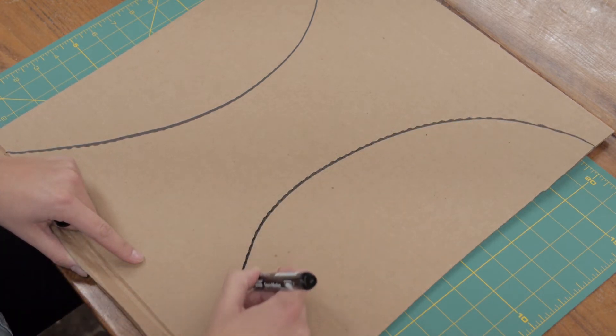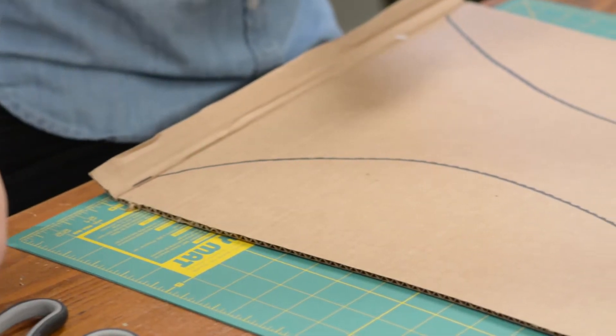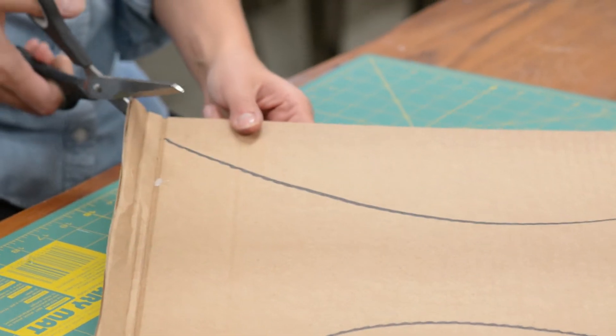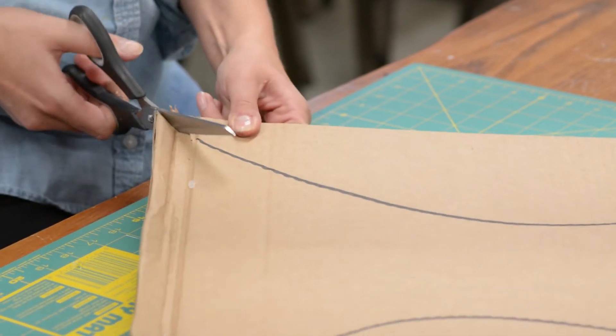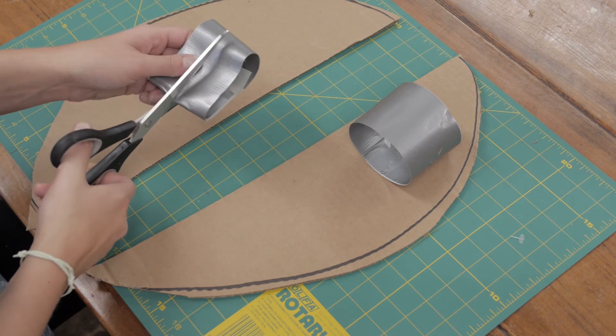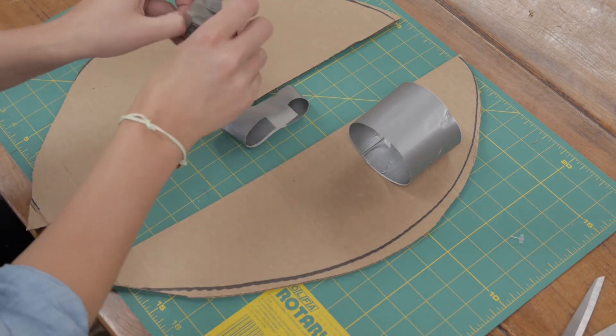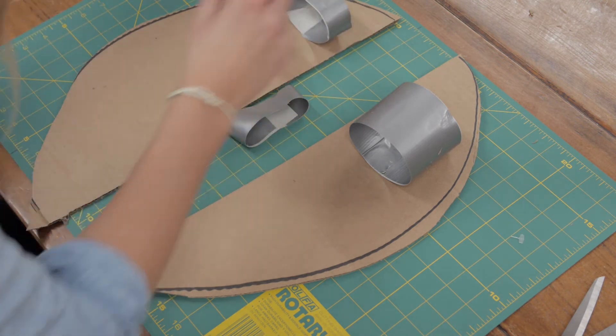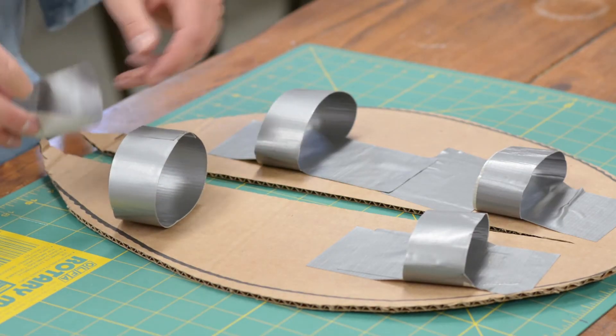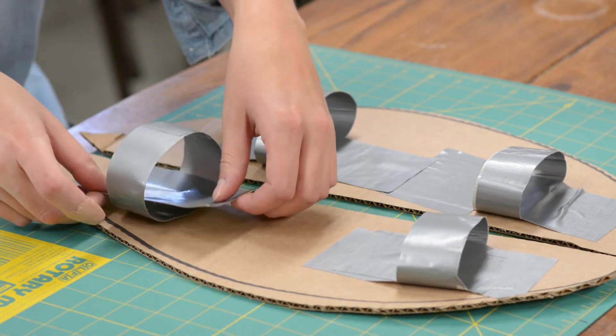Take the duct tape and make some loops. Secure them to the bottom side of the wings. One loop is for the upper arm and one is for the hand or wrist.